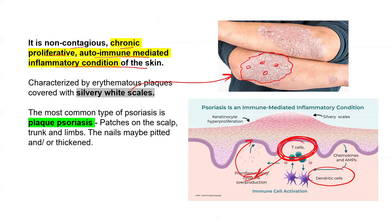This causes more damage to your keratinocytes and a lot of proliferation. In normal skin, keratinocytes take 23 days to reach the stratum corneum, but in this disease they take only five to six days. They are not mature, so they keep overproducing and piling up on top of the skin, leading to these silvery white scales.